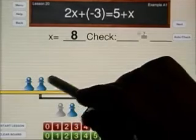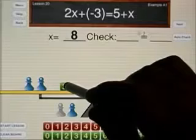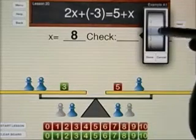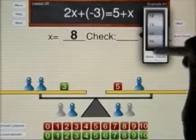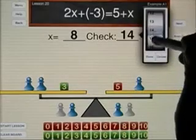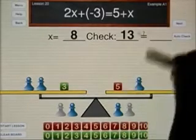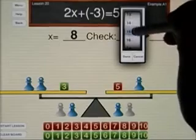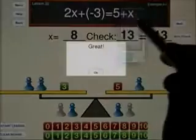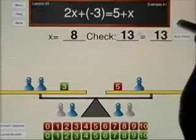16 take away 3 would be 13, so this side has a value of 13. And if x is 8, 5 and 8 is 13, so both sides do have the same value.